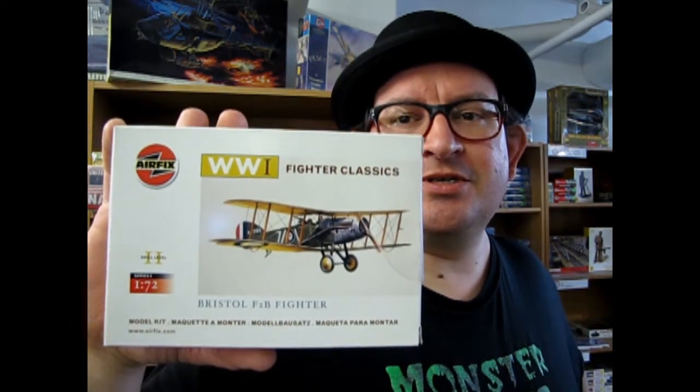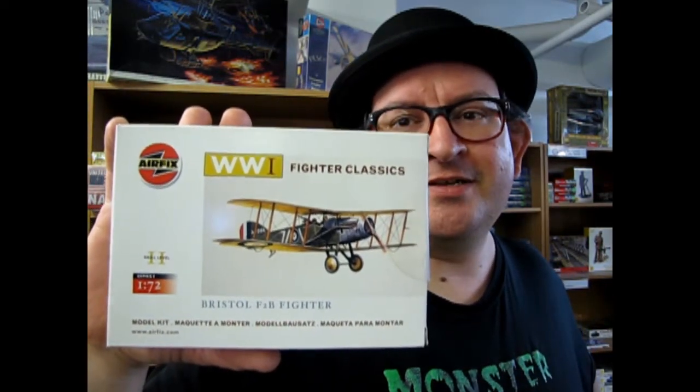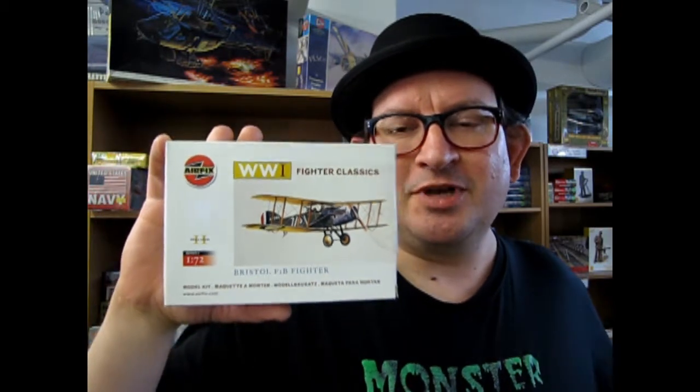Today we are going to look at this Airfix classic two-seater airplane from 1916. September 1916 is when the real one made its debut on the battlefield, with two people flying the airplane. One was the rear tail gunner and the other was able to fire the front guns as well as fly the plane, which was pretty crucial in the war.